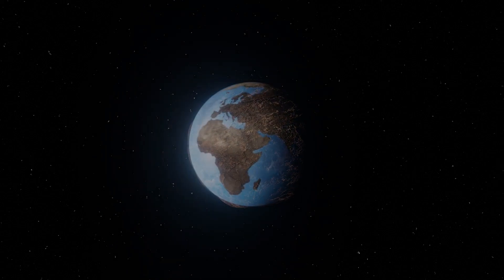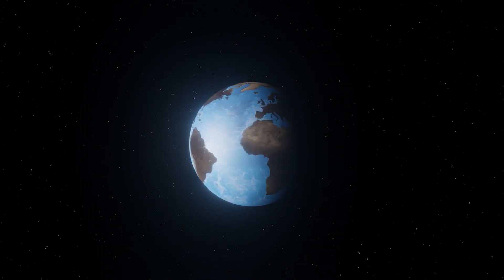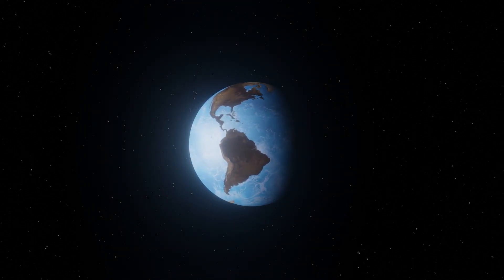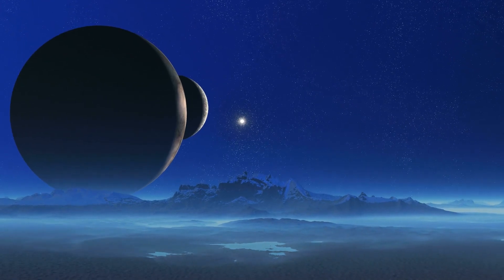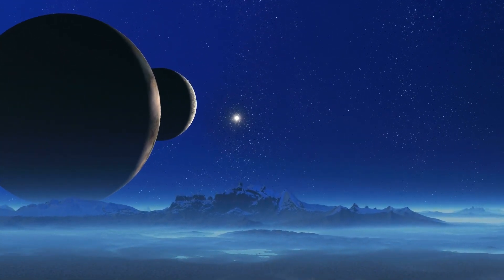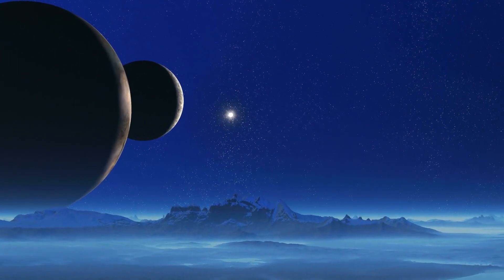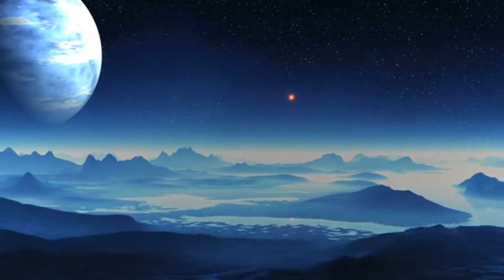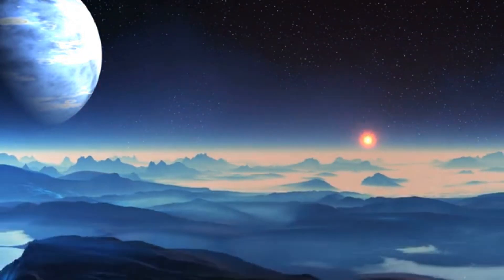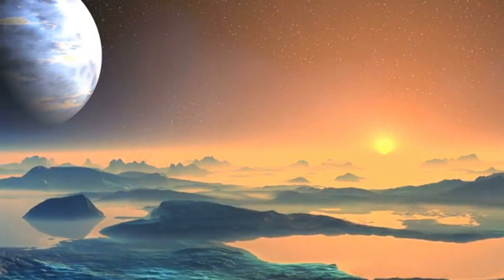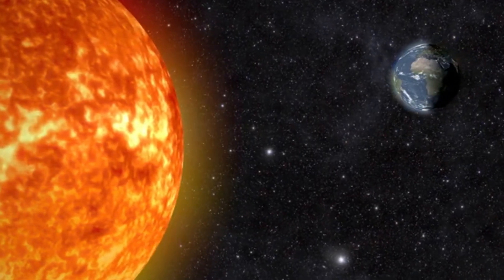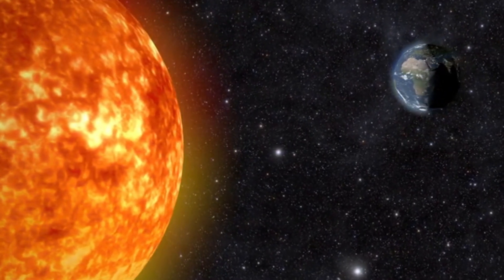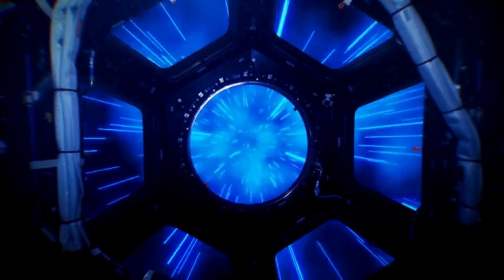Thus, researchers often focus on planets that are similar to Earth, since Earth is the only known planet that supports life. However, this approach has its limits. Life could possibly exist in conditions very different from Earth's, like on planets with extreme temperatures or unexpected chemical compositions. If we only search for life on Earth-like planets, we may overlook entirely different forms of life that could thrive in conditions we currently consider hostile.